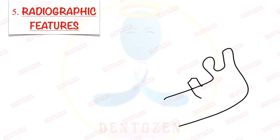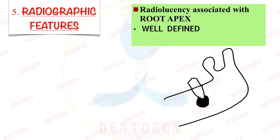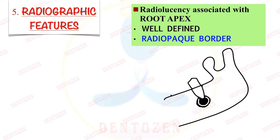Regarding radiographic features, as a cyst it presents as an oval, round, or pear-shaped radiolucency in the periapical region of a non-vital tooth. The borders of this radiolucency are well-defined, and sometimes we can see a radiopaque border — a white line on the periphery representing the bony reaction.